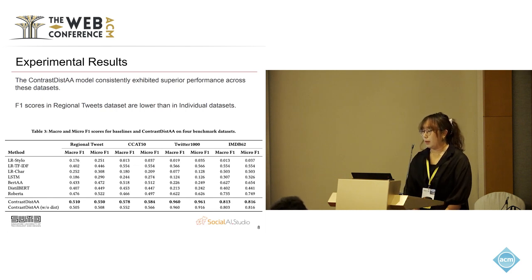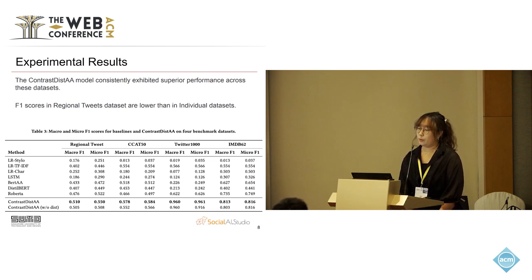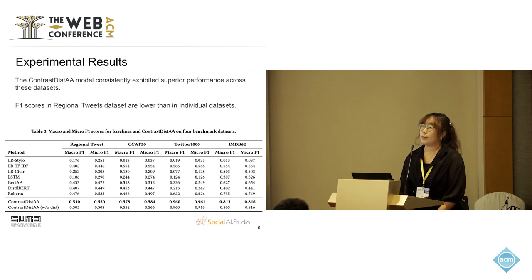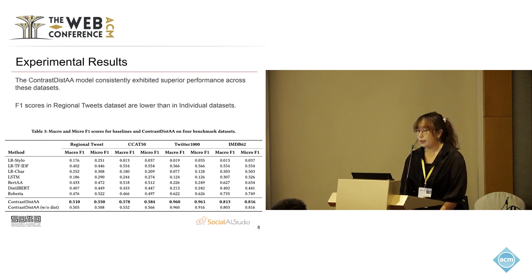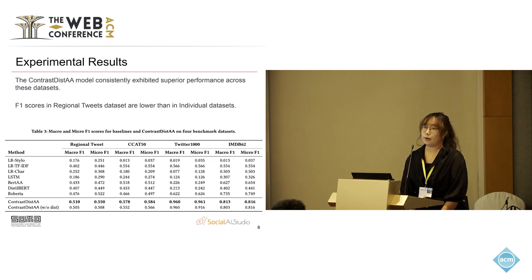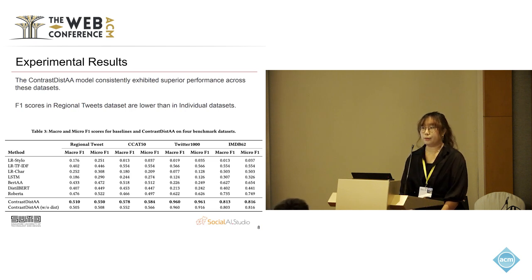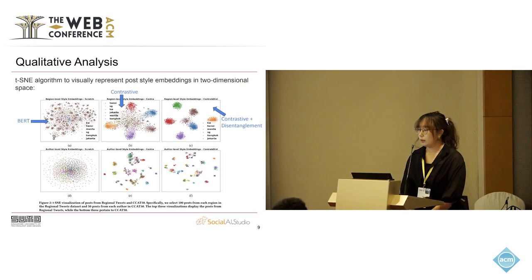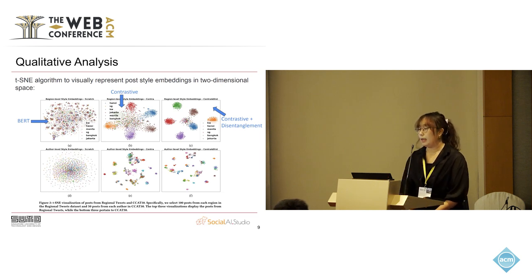From our experiment results, we selected macro F1 and micro F1 scores. From this table, we can see that the contrastive disentanglement model can consistently outperform all other baseline models, including both traditional methods and deep learning based methods. We also found an interesting result: F1 scores on the regional dataset are lower than on the individual datasets. This is mostly because individual level authors tend to have more distinct writing styles than a group of authors from an entire region. We also used the T-SNE algorithm to visualize the post-style embeddings for three models: basic BERT, contrastive learning only, and the contrastive disentanglement method.